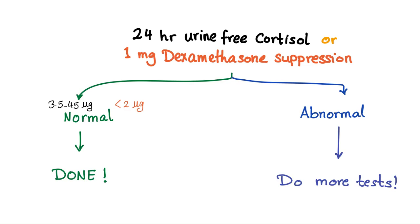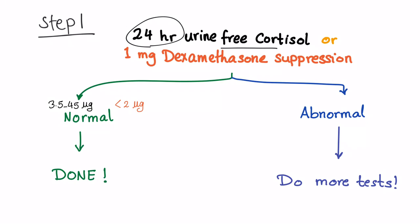Step one: we do a 24-hour urine free cortisol — we collect urine over 24 hours and measure the cortisol in it. The normal level is 3.5 to 45 micrograms per day. If you don't want to use this test, you can give one milligram of dexamethasone — it's called the one-milligram dexamethasone suppression test. Dexamethasone is a steroid; it's like cortisol.